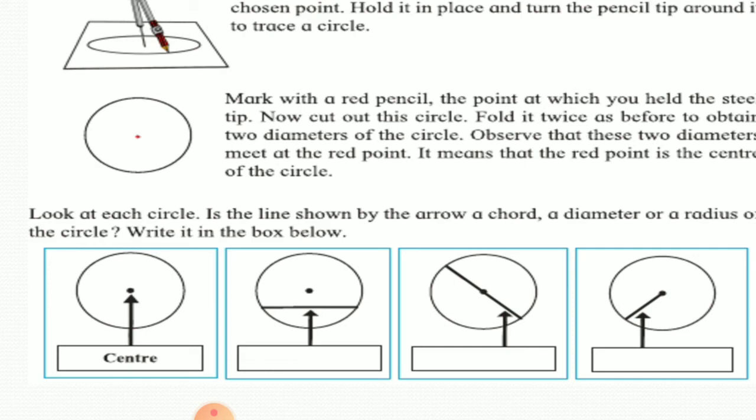Now in the fourth figure, if I see, we have taken a line from the center to the circumference of the circle. Now this is known as the radius of the circle.